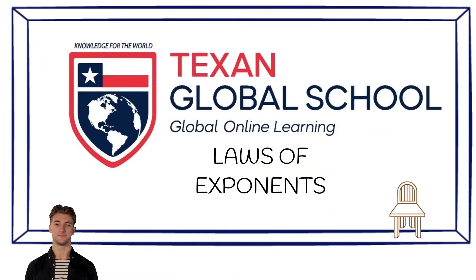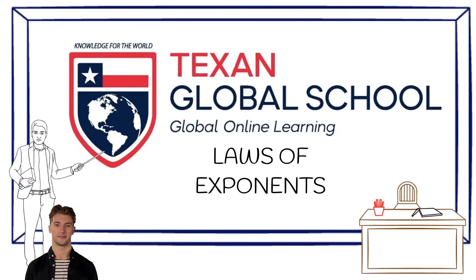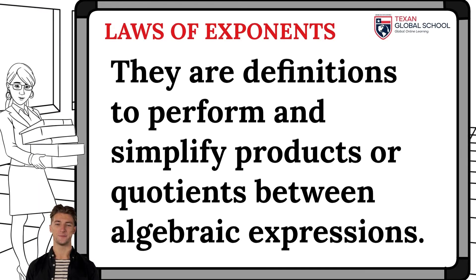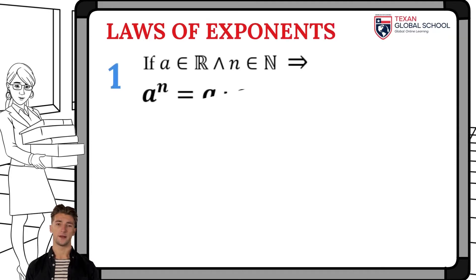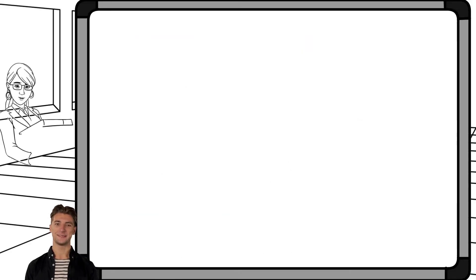Texan Global School — Laws of Exponents. The laws of exponents are definitions that serve to simplify products or quotients between algebraic expressions. The first definition indicates that every number raised to the nth power is equivalent to multiplying that number n number of times. The second law indicates that every number raised to zero is equal to one. The third law indicates that every number a raised to the first power is equivalent to that same number a.